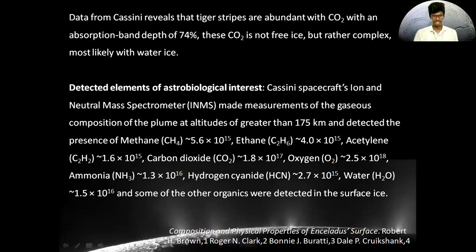Detected elements of astrological interest: the Cassini spacecraft detected the presence of methane, ethane, acetylene, carbon dioxide, oxygen, ammonia, and water in the plumes, and also some other organic compounds were detected on the surface.